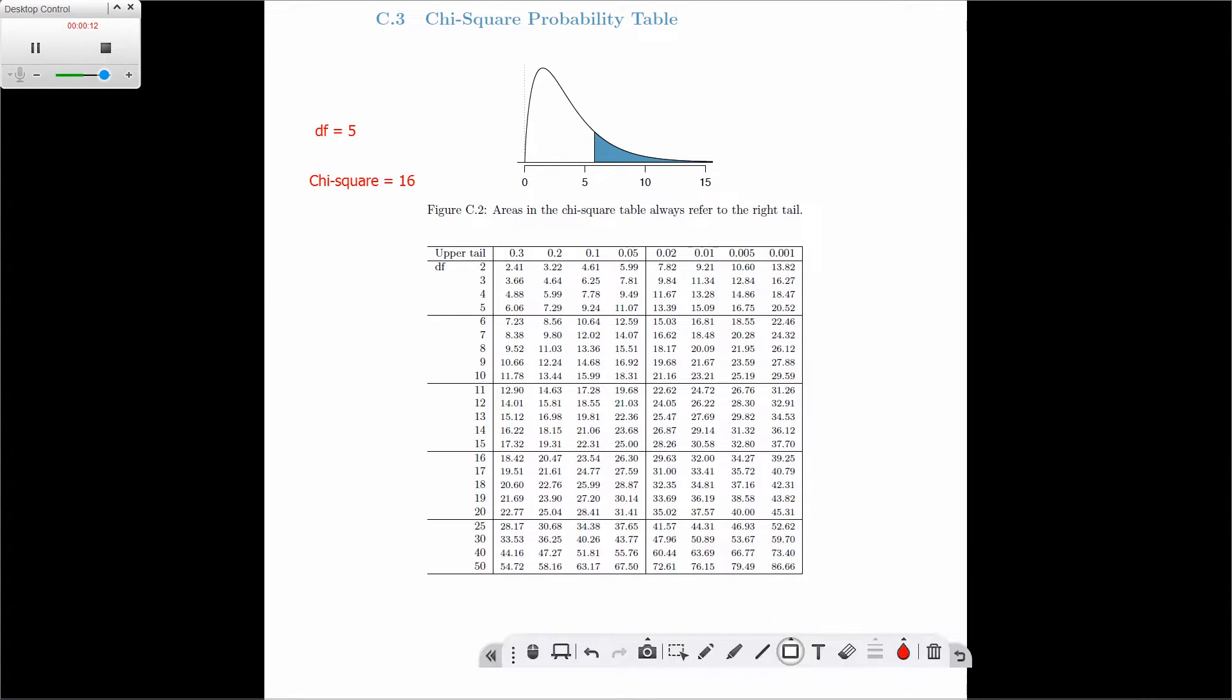So we start with a degree of freedom, and we find the degree of freedom on the left-hand column, and we then isolate that entire row, in this case 5. So once we've got this, we can now look at our chi-square value, which is 16.